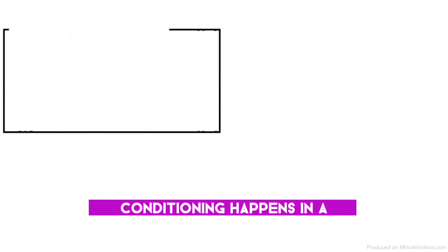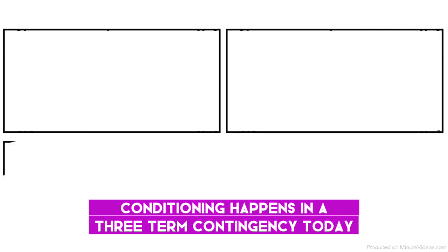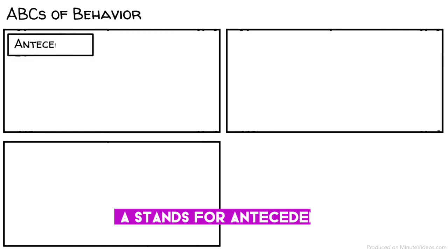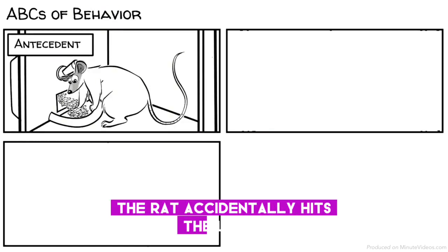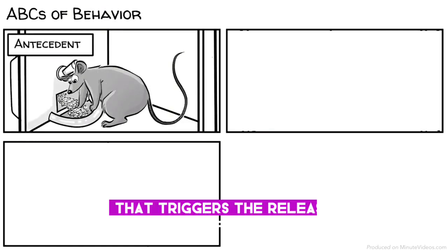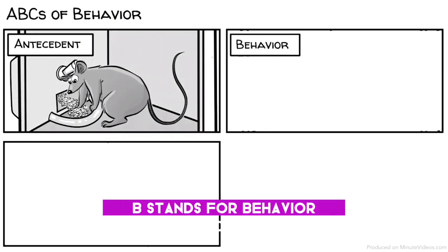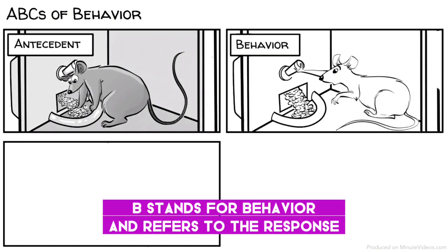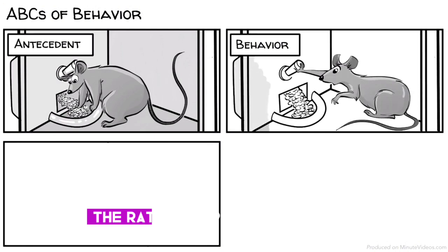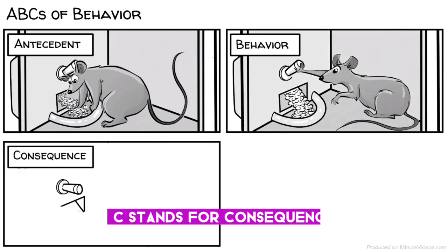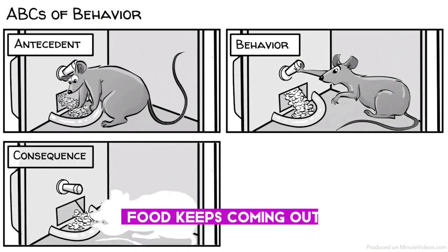Conditioning happens in a three-term contingency, today known as the ABCs of behavior. A stands for antecedent — the rat accidentally hits the lever that triggers the release of food. B stands for behavior, and refers to the response — the rat keeps pressing the lever. C stands for consequence — food keeps coming out.